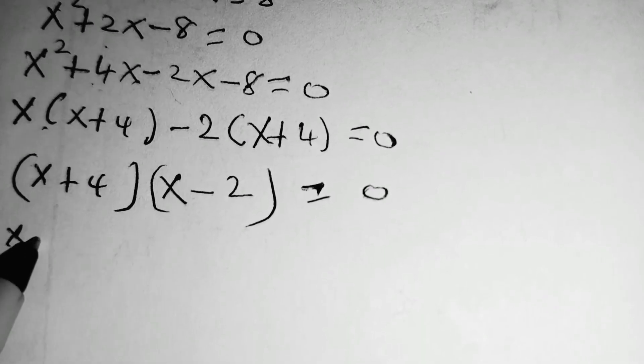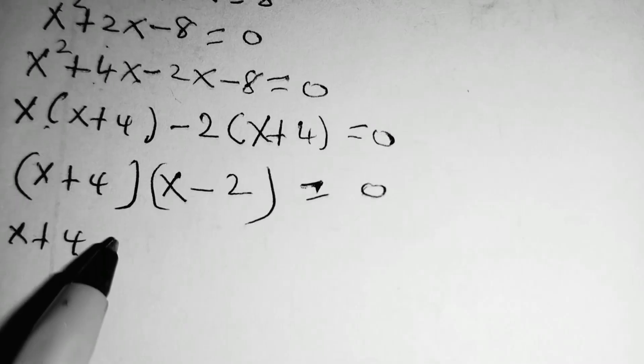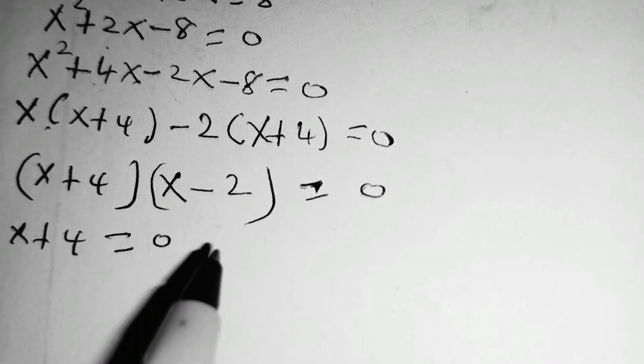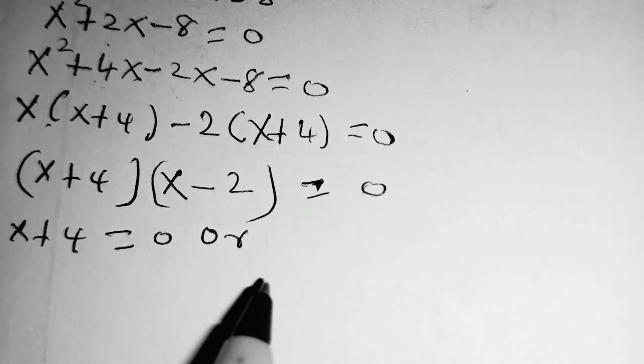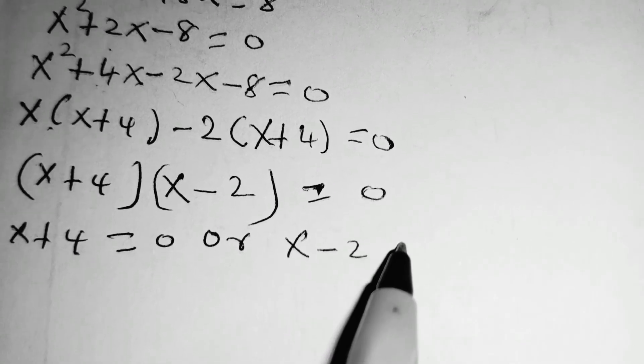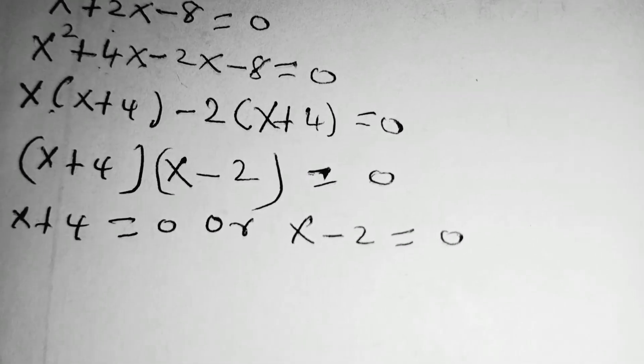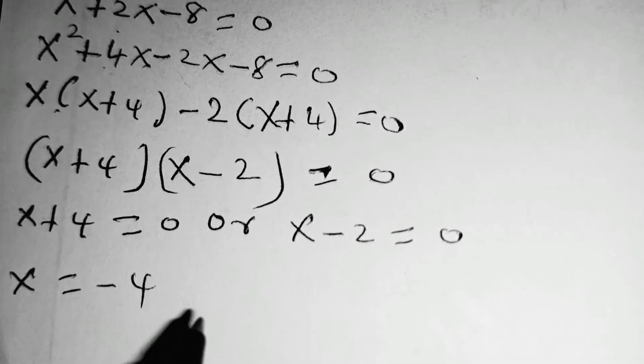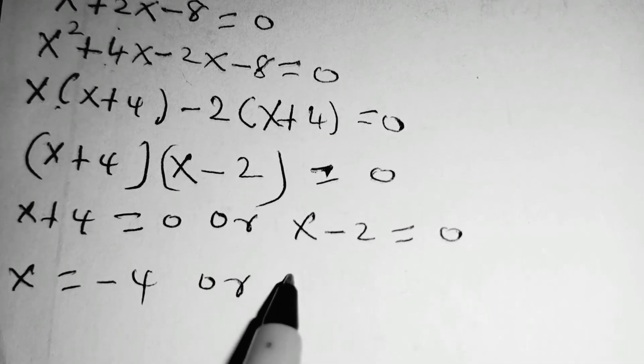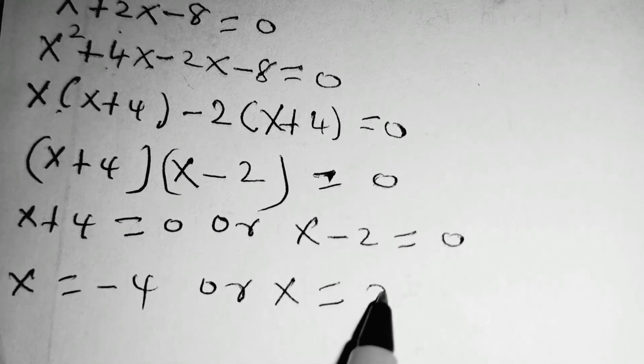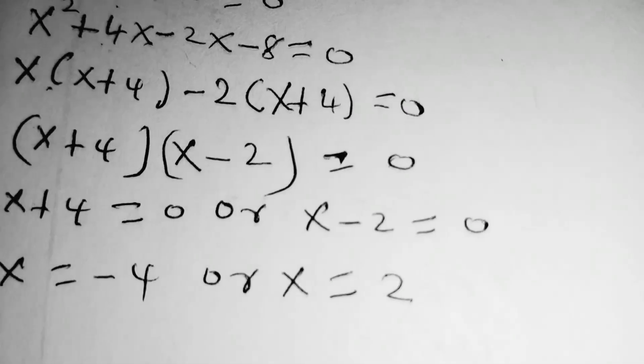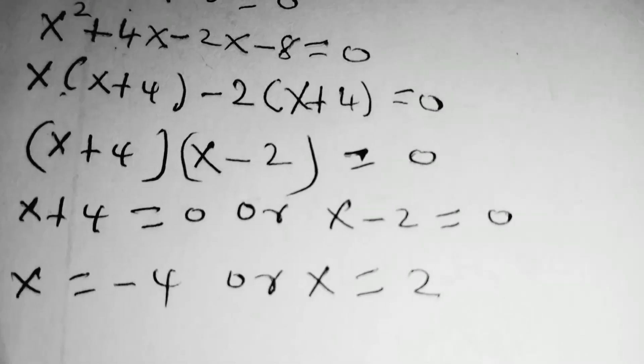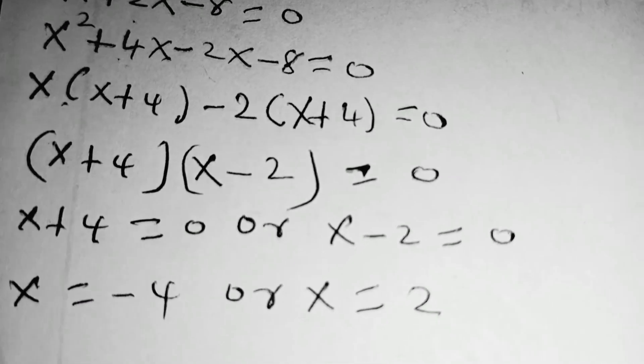This implies that x plus 4 is equal to 0, or x minus 2 is equal to 0, meaning that x is equal to negative 4, or x is equal to 2. So those are the values of x in the given equation.